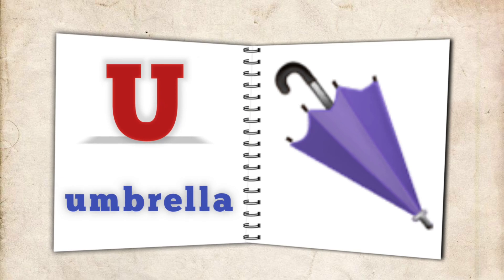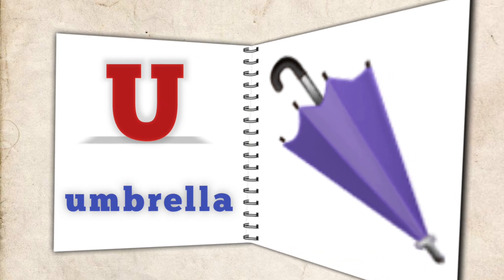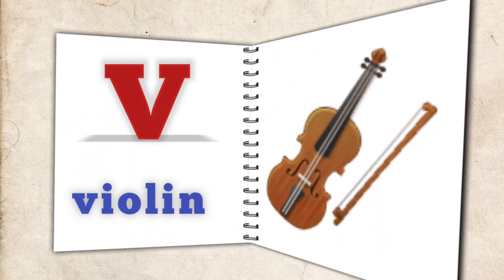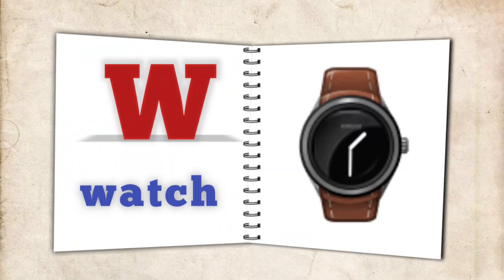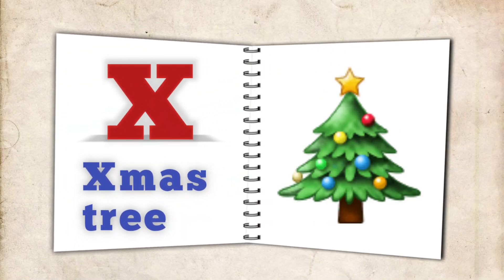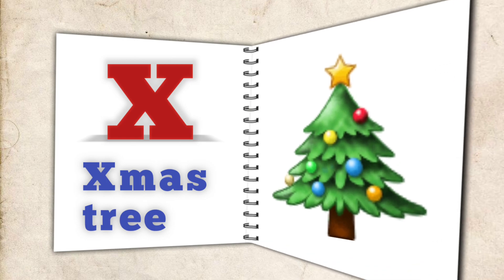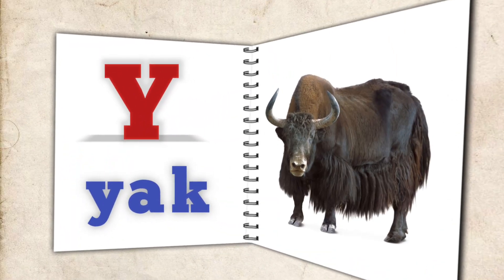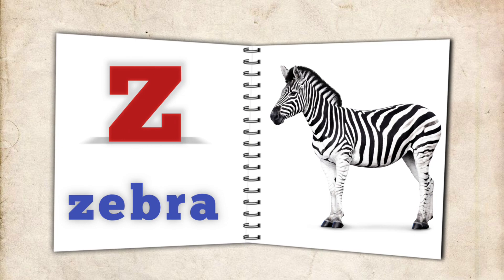T for tiger, U for umbrella, V for violin, W for watch, X for x-mas tree, Y for yak, Z for zebra.